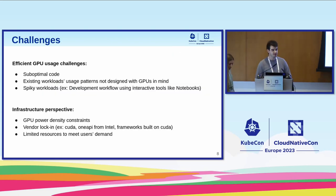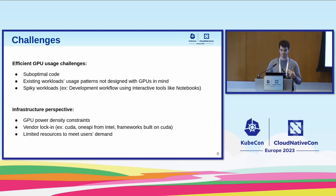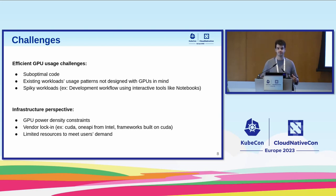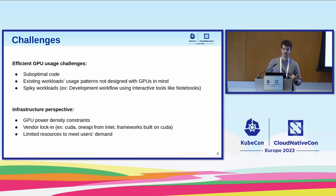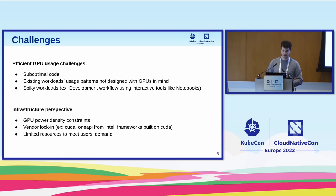We have some challenges when using GPUs. Some users have suboptimal code — strong interactions between CPU and GPU, or moving memory around. Other challenges include legacy code: code that was not designed for CPUs but was ported to GPUs, and it doesn't work the same way. Some workloads are also spiky in nature — a scientist developing an algorithm in a notebook where it just sits idle and doesn't use the GPU at all. On the infrastructure side, the most important challenge is limited resources to meet all users' demand, because GPUs are expensive and a lot of people are looking for them.